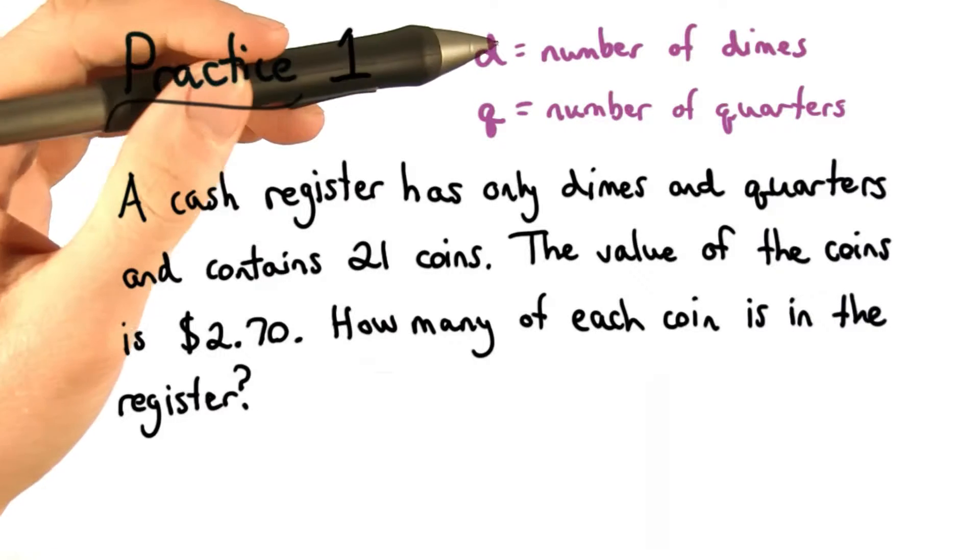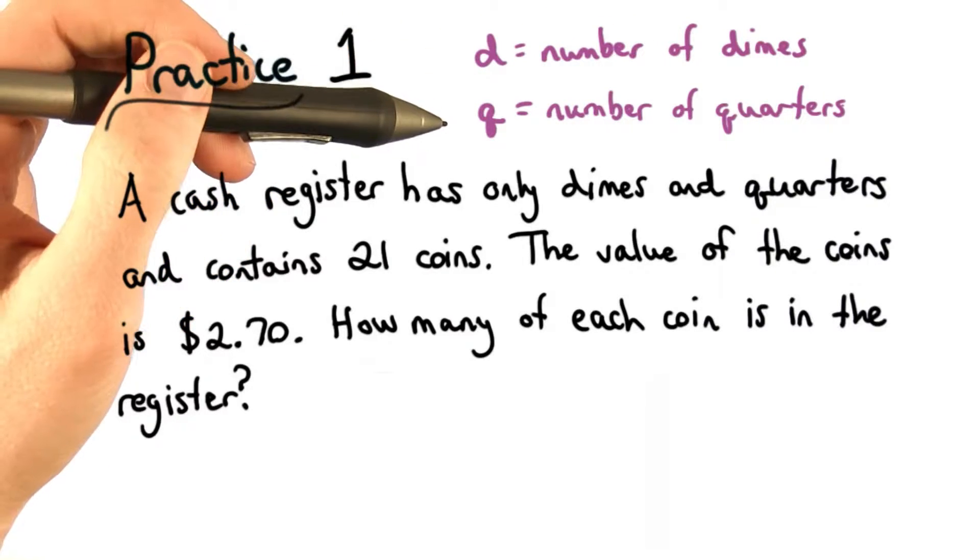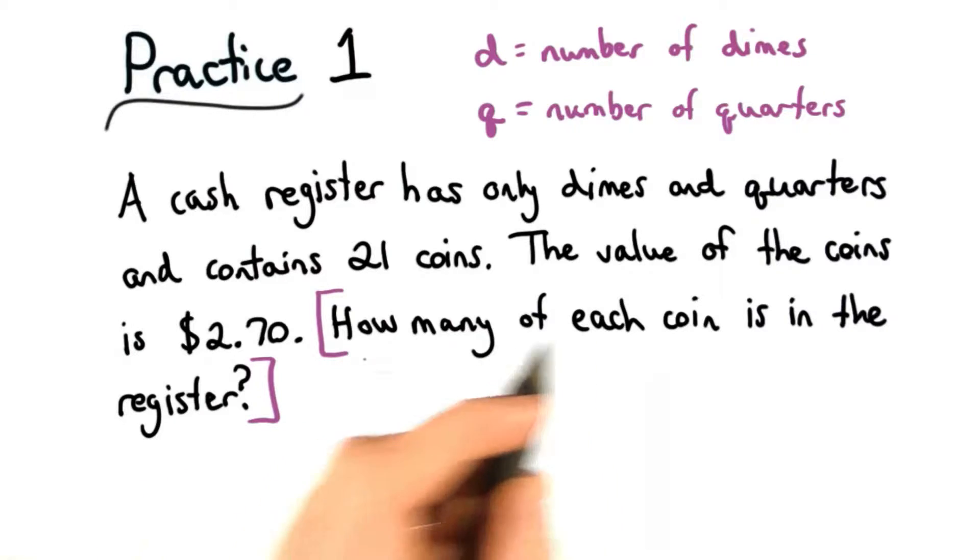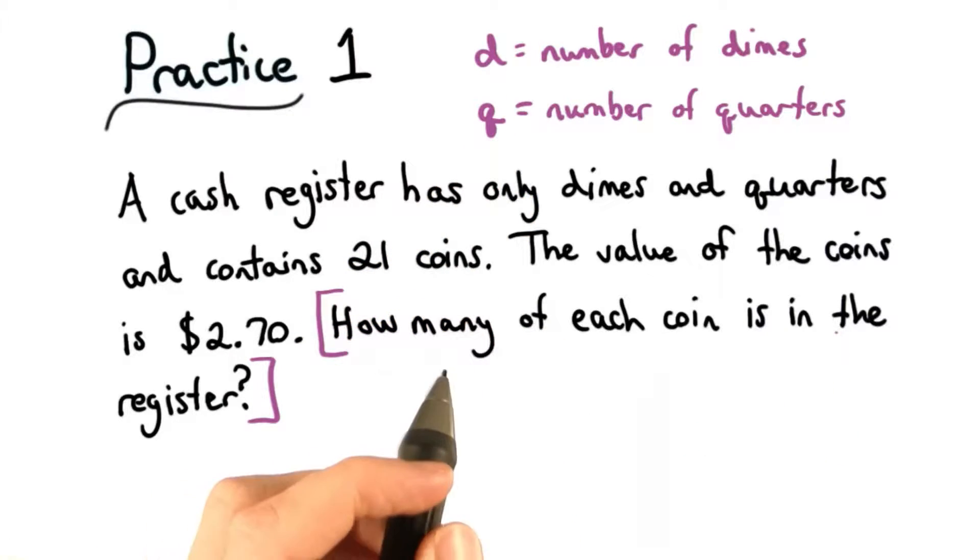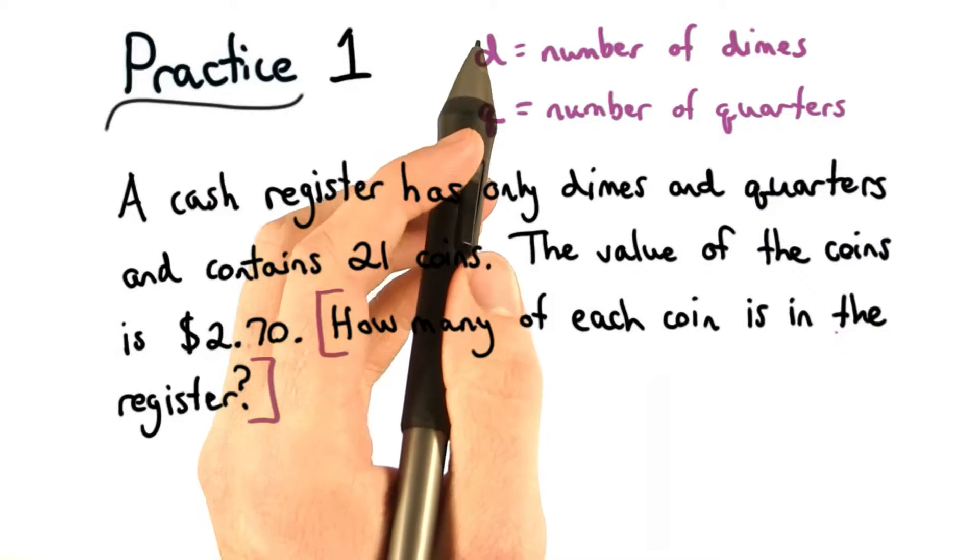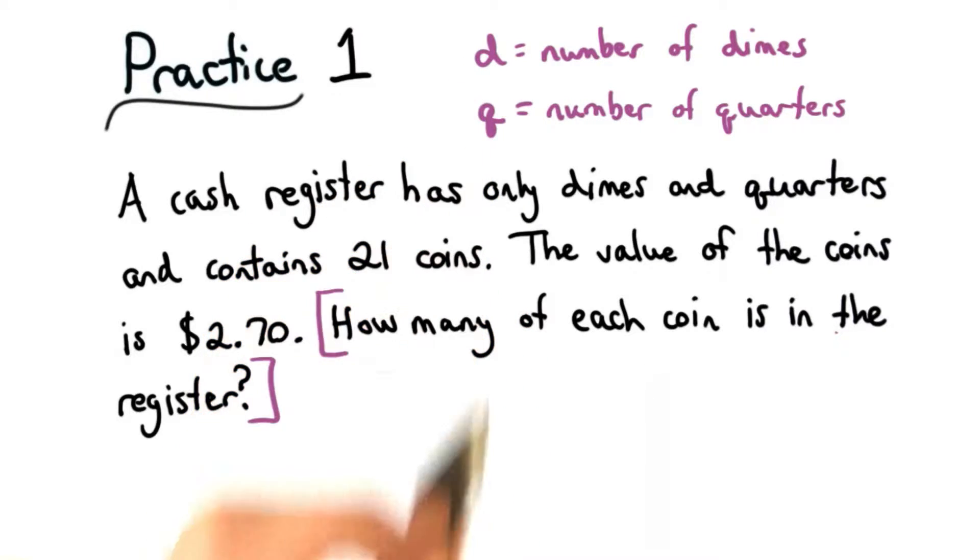To start solving this problem, we're going to let d equal the number of dimes and q equal the number of quarters. The question indicates the variables that we need to use. In this case, we need to know how many of each coin we have, so we need two variables, d and q.